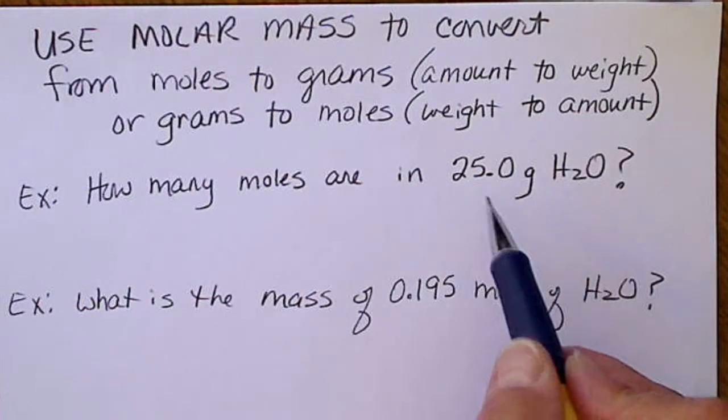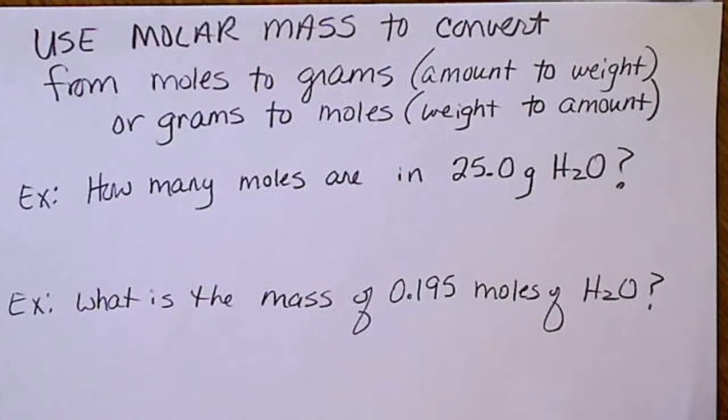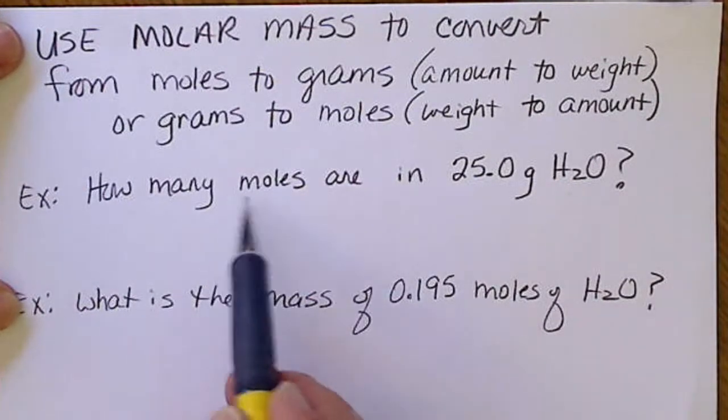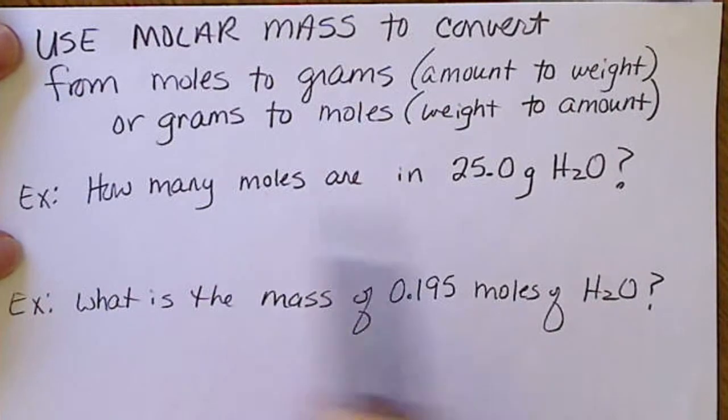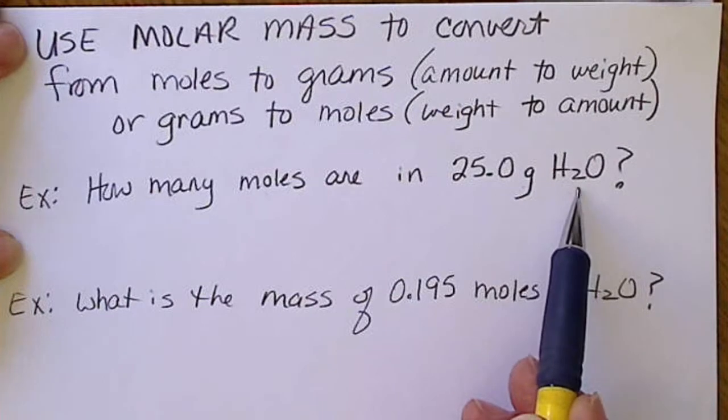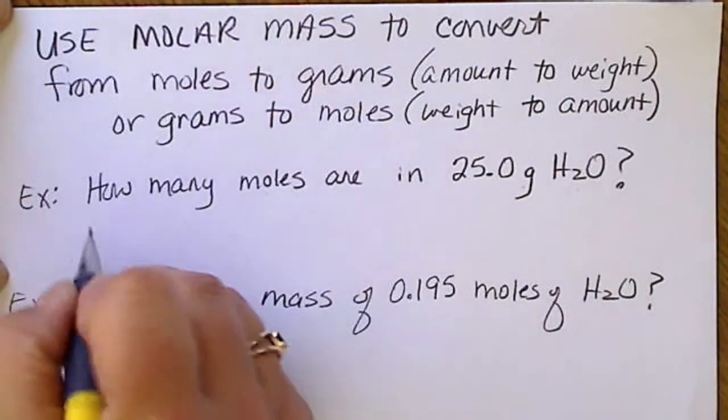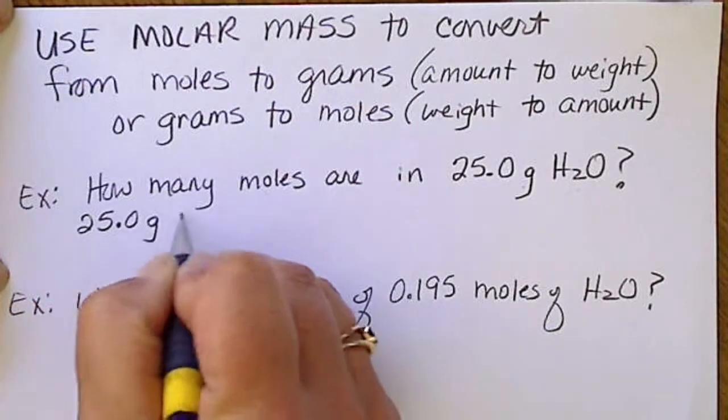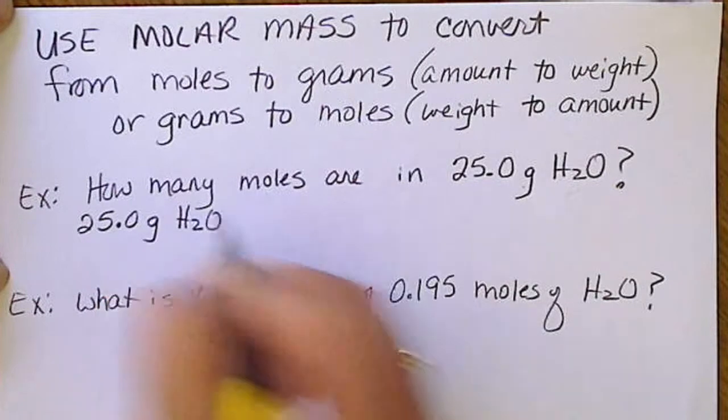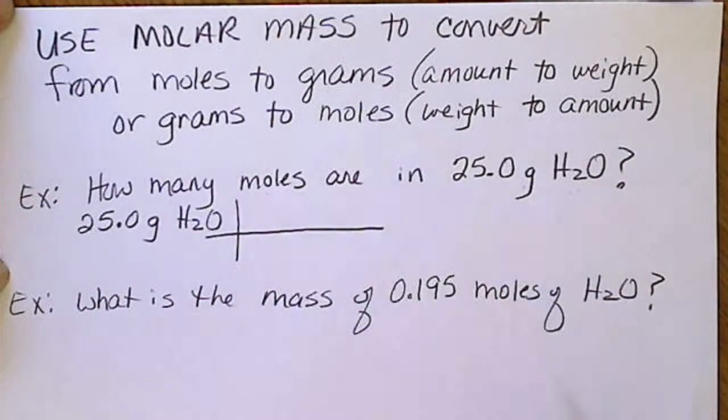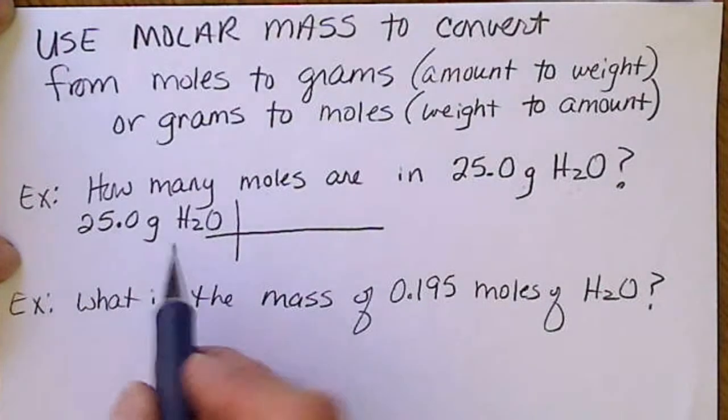We can do this separately or we can just do this by the science of canceling units. So if we are asked to find how many moles there are in a certain mass, for example of water, we would write down the mass or the given 25.0 grams of H₂O.